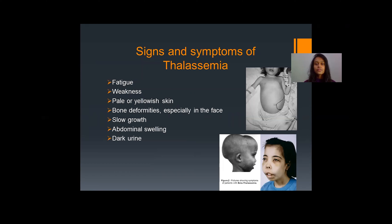The signs and symptoms of thalassemia include fatigue, weakness, and low immunity, making patients easily prone to infections and diseases. They have pale or yellowish skin due to the reduction of red blood cells in circulation. They also have bone deformity, especially in the face. The bone marrow gets enlarged to produce more blood cells, causing bones to widen, but their strength is reduced, making them prone to deformities and fractures. Patients also show slow growth and abdominal swelling.